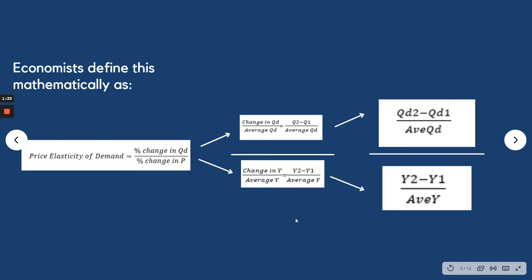This is the simple representation: QD2 minus QD1 over average QD, which is your percentage change in quantity demanded, over income 2 minus income 1 over average income, which is the change in income.